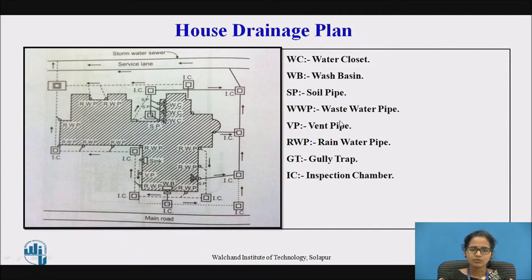We have the wastewater pipe — the water when used for different purposes like in commercial buildings, domestic use, or industries, which consists of impurities, is collected in the waste water pipe.